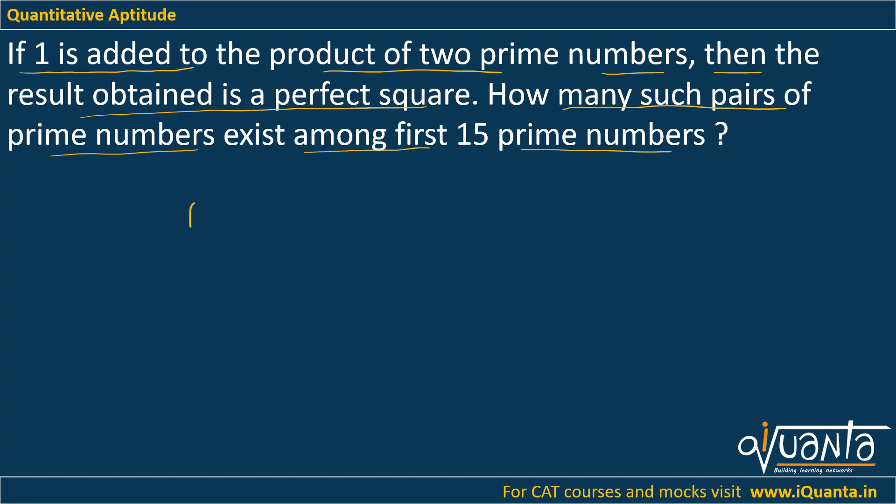So we have to find out the product of two primes. Let those primes be p₁ and p₂, and if I add one to their product I am getting a perfect square, so let it be k².